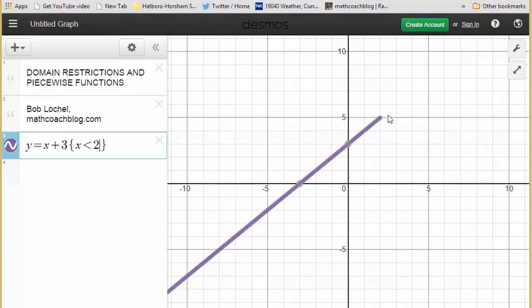One small thing though: x is less than 2 means in algebra class we're supposed to have an open circle here. Desmos right now does not have the functionality of putting the open circle there on its own, but there is a nice little workaround you can use. In the next line, I'm going to type in that point, which is (2, 5).